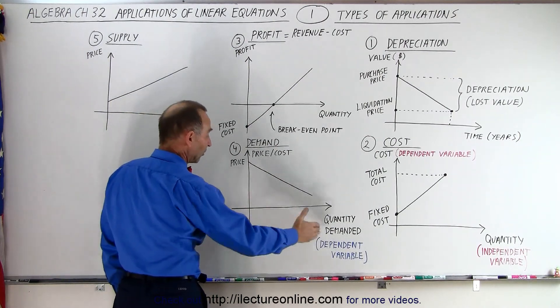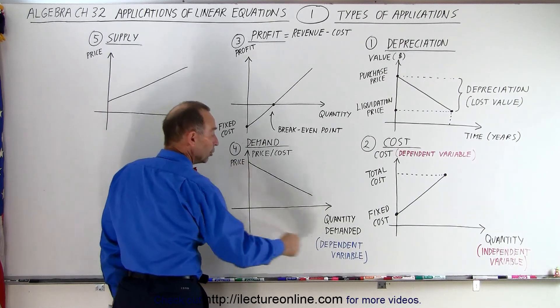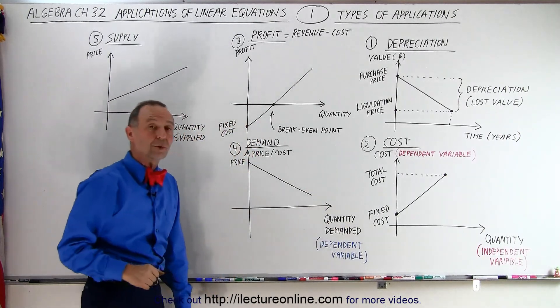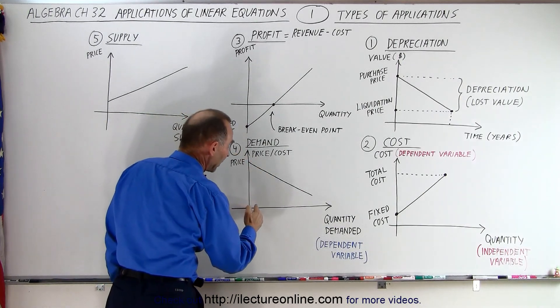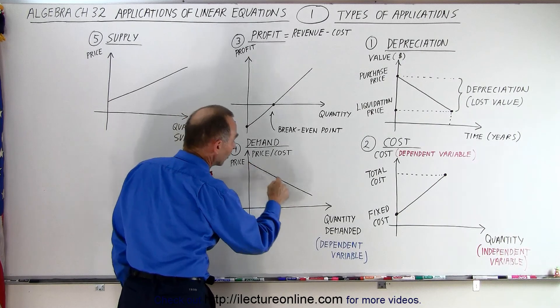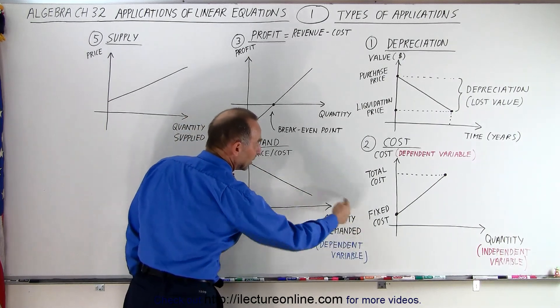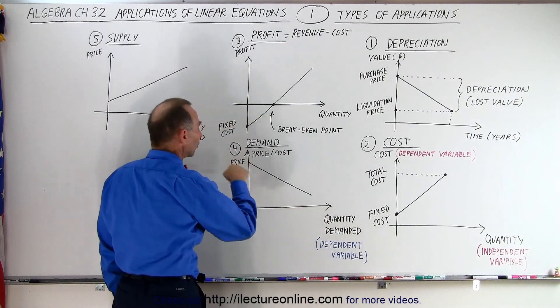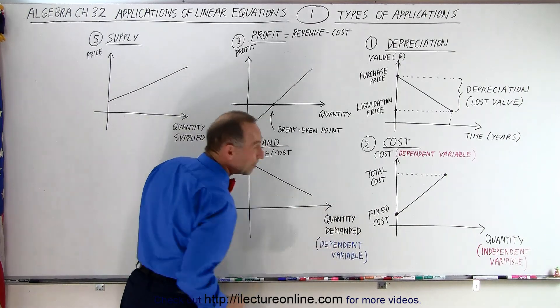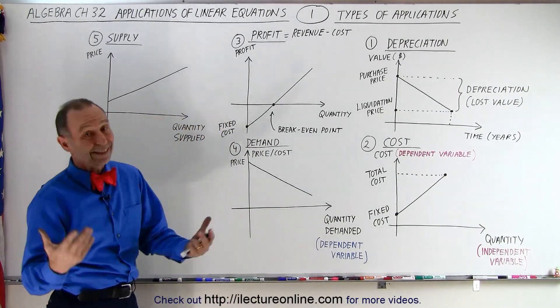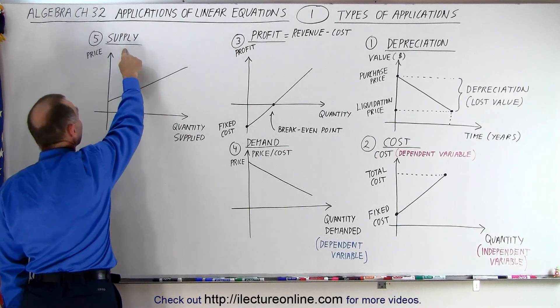So if you set your price very high, the independent variable, you're not going to get a lot of demand. Nobody's going to buy your bananas. As you begin to lower the price, the number of people buying bananas is going to increase. And the lower the price becomes, the greater your demand. So I like to call this the quantity demanded and I like to call this the price. So this becomes the independent variable and that becomes the dependent variable. And when you look at it, it seems to make more sense.